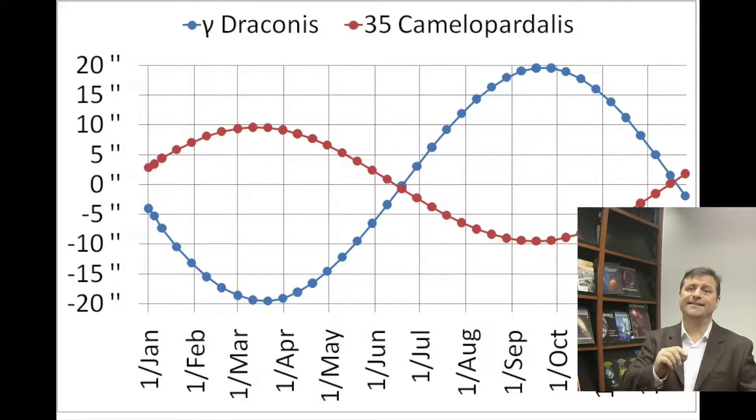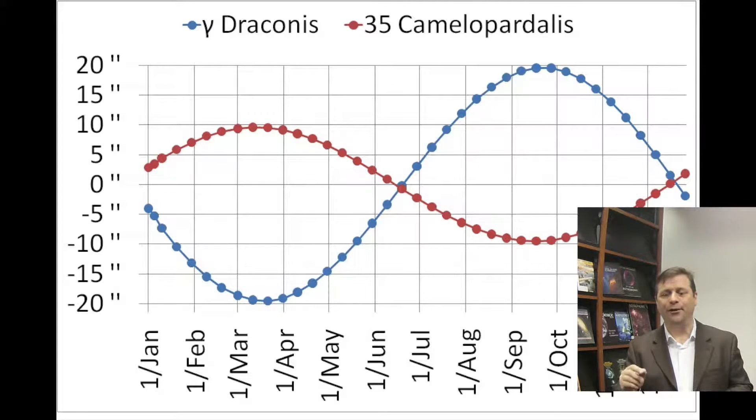But if he waited for the star 35 Camelopardalis to come into view, he found at the same exact time that 35 Cam, at the same time that Gamma Drac was drifting southward, 35 Cam was drifting northward, but just by a little bit, not as much. And they actually swapped places.